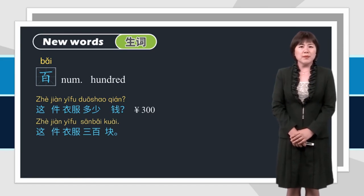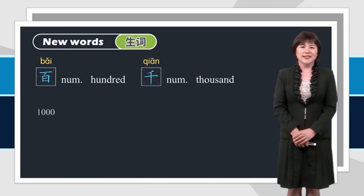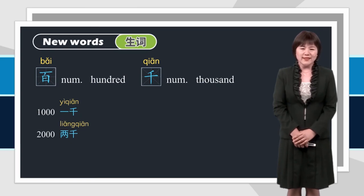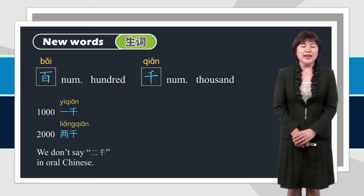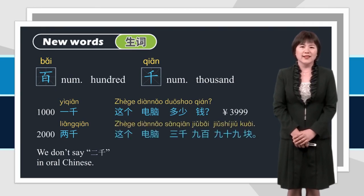Do you still remember how to say thousand? Yes, 千。一千，两千。Pay attention, we don't say 二千 in oral Chinese. 这个电脑多少钱？这个电脑三千九百九十九块。